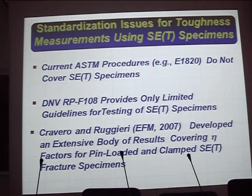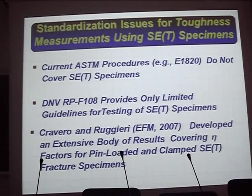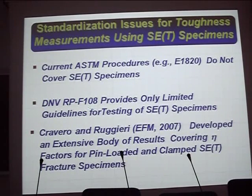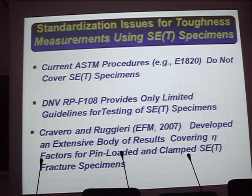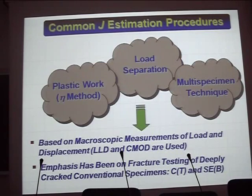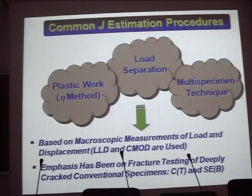There are some issues with the toughness measures with the SENT specimen. The current procedures, for example ISO 12135 and 1820, do not cover SENT specimens. The DNV — Det Norske Veritas — procedure F108 provides only very limited guidelines for testing this kind of specimen. We developed an extensive body of results covering this specimen, but there are still some issues. I'll present very briefly three common J-estimation or CTOD procedures.